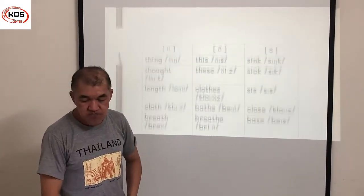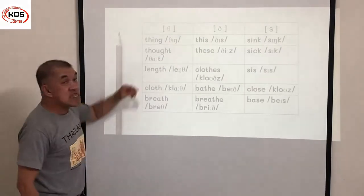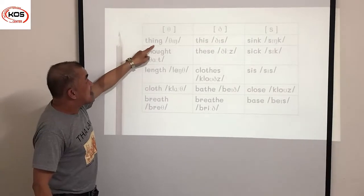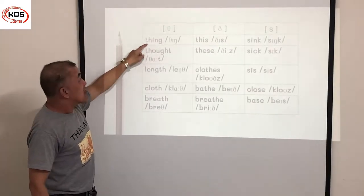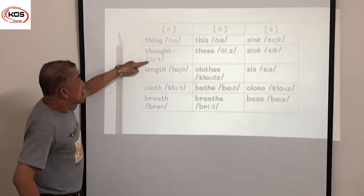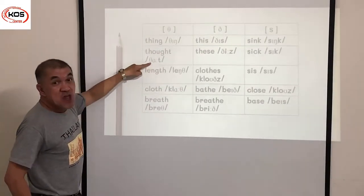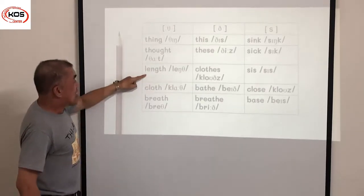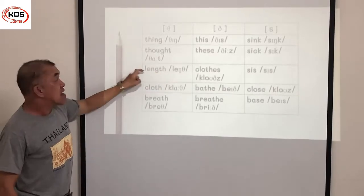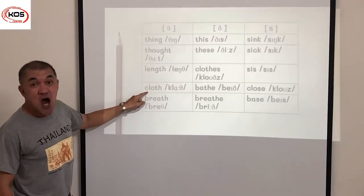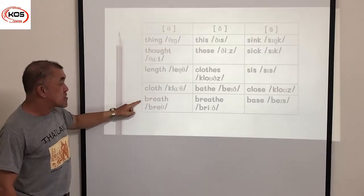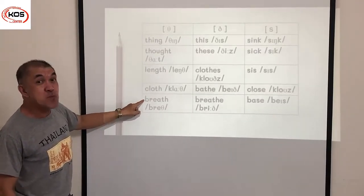For the pronunciation drill, let's begin with the unvoiced TH sound. Example: thing, thing, thing. Next word: thought, thought, thought. Next word: length, length, length. Next word: cloth, cloth, cloth. Next word: breath, breath, breath.